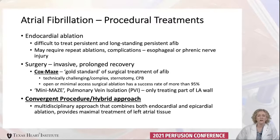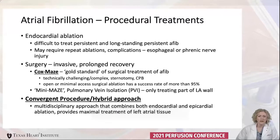Other techniques like the mini-maze are a mix of different approaches and lesions. Pulmonary vein isolation is another technique, but it only treats part of the left atrial wall. The convergent procedure, or the hybrid approach to AFib, is a newer technique where a multidisciplinary team with EP cardiologists and surgeons do a combination of endocardial and epicardial ablation, providing maximal treatment to the left atrial tissue.